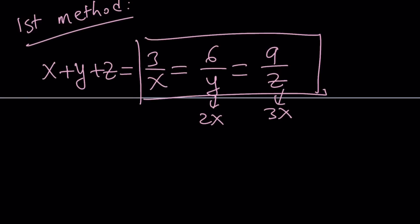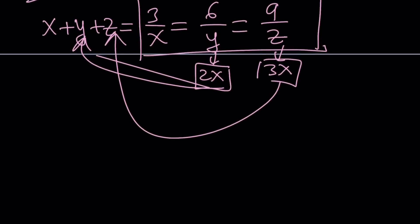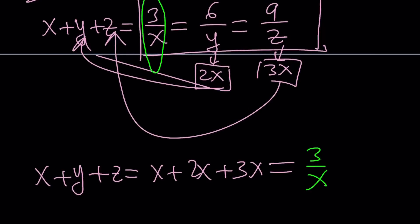So now from here, what do we get? We get something nice, because we can go ahead and plug these in here. So let's go ahead and do it. x plus y plus z equals x plus 2x plus 3x. That is x plus y plus z. And that is also equal to 3 over x. The reason why I use that one is because everything is in terms of x.